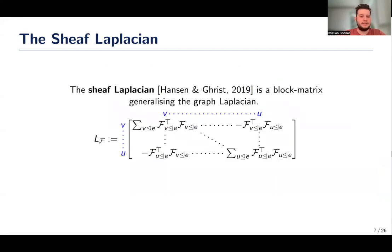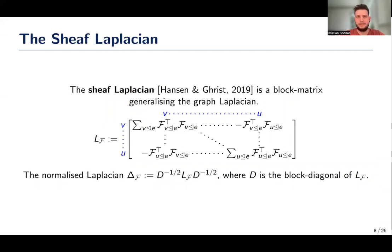By making use of these linear maps, we can construct a sheaf Laplacian, a generalization of the graph Laplacian. Unlike the graph Laplacian, this is a block matrix, meaning that the entry corresponding to two nodes, say V and U, is a matrix describing how the features between V and U should be transported. Using the diagonal blocks of this matrix, we can also obtain a normalized sheaf Laplacian by following a similar algebraic procedure as for the normalized graph Laplacian.